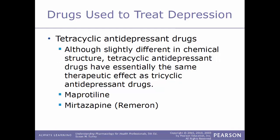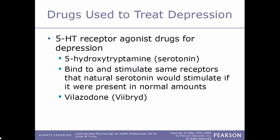Another category used to treat depression are the tetracyclic antidepressants. Although slightly different in chemical structure, they have essentially the same therapeutic effect as tricyclic antidepressants. Examples include maprotiline and mirtazapine (Remeron). Another category is the 5-HT receptor agonist drugs — the 5-HT referencing serotonin receptors, formally known as 5-hydroxytryptamine.